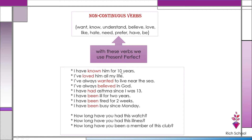'I have known him for ten years.' 'I've loved him all my life.' 'I have lived here all my life.' By the way, with 'all my life,' you don't need 'for.' 'I've always wanted to live near the sea.' 'I have always believed in God.' 'I have had asthma since I was thirteen.' When you want to say you have an illness or problem, you use present perfect with 'have,' because 'have' meaning 'to possess' is never used in continuous.